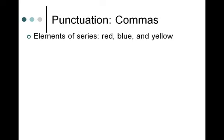In terms of elements of a series, use commas to separate them. In other styles, you might not put a comma before the conjunction — you do 'red, blue and yellow' with no comma there. But APA says you need a comma. Put commas between all parts of a series, including separating the last one from the conjunction in the final part of the series.